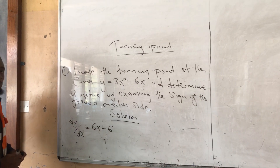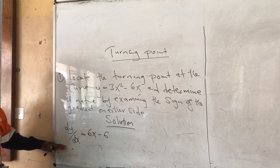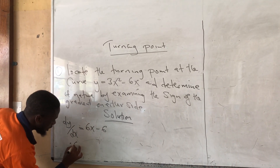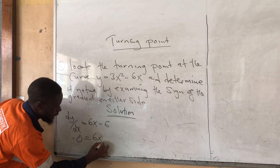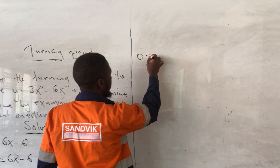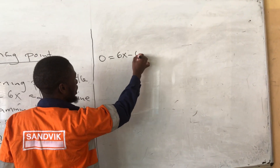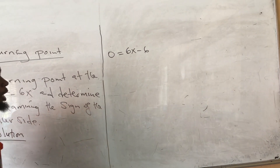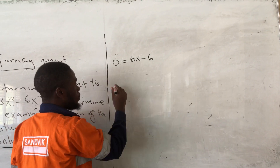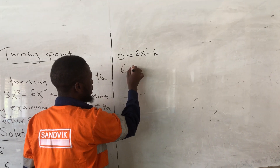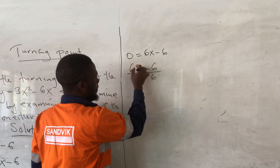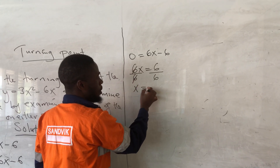At the turning point, dy/dx equals 0. So where there is dy/dx, we put 0. It will be 0 equals 6x minus 6. We need to make x the subject of the formula to find the value of x. So 6x equals 6, meaning x equals 1.